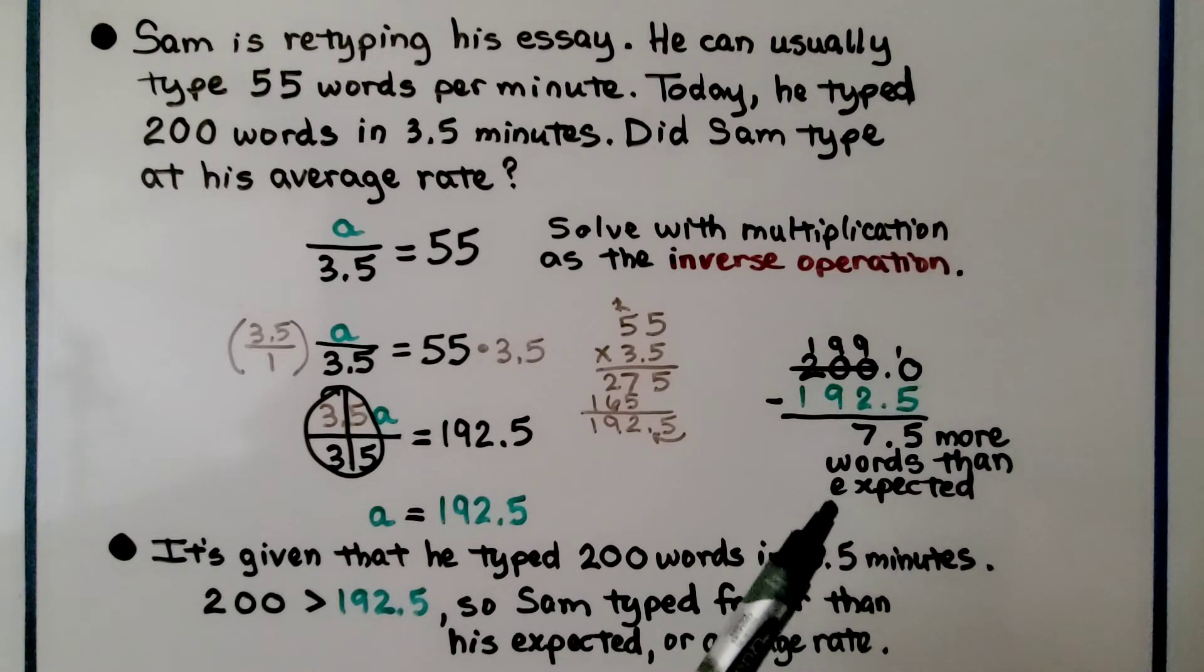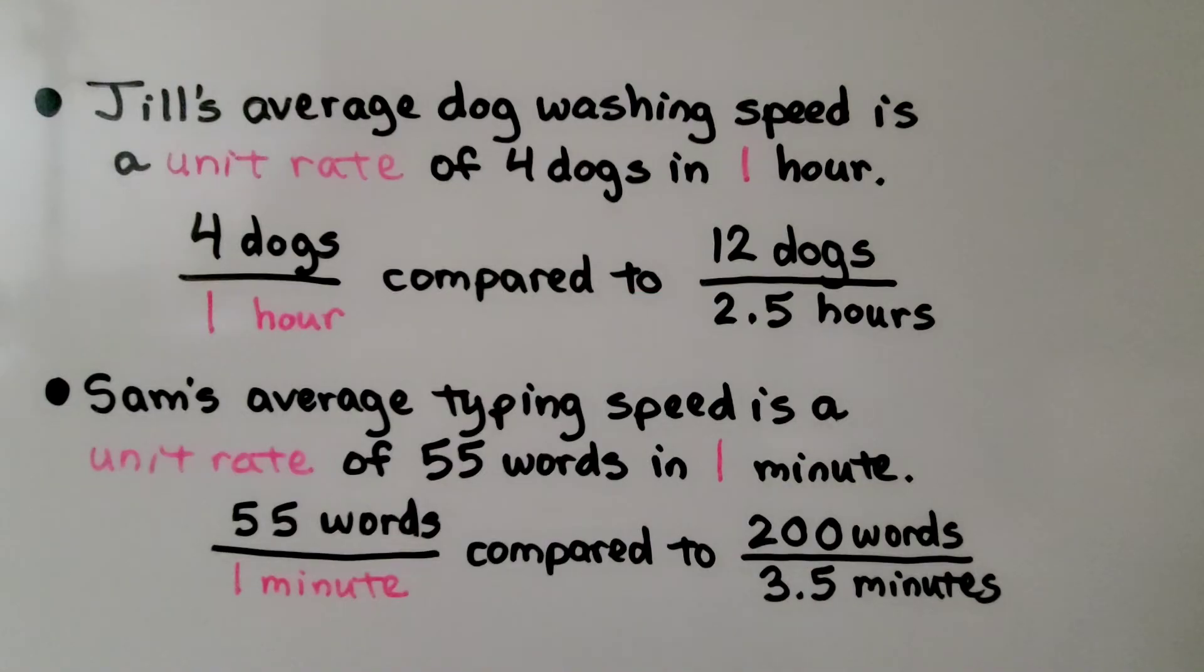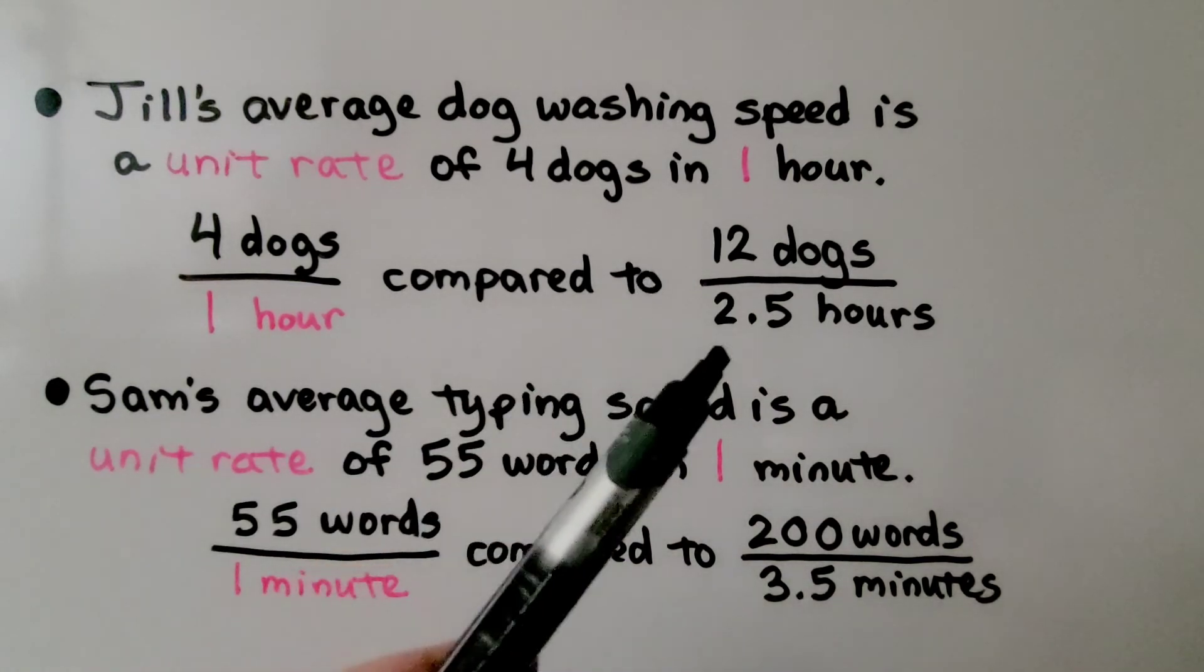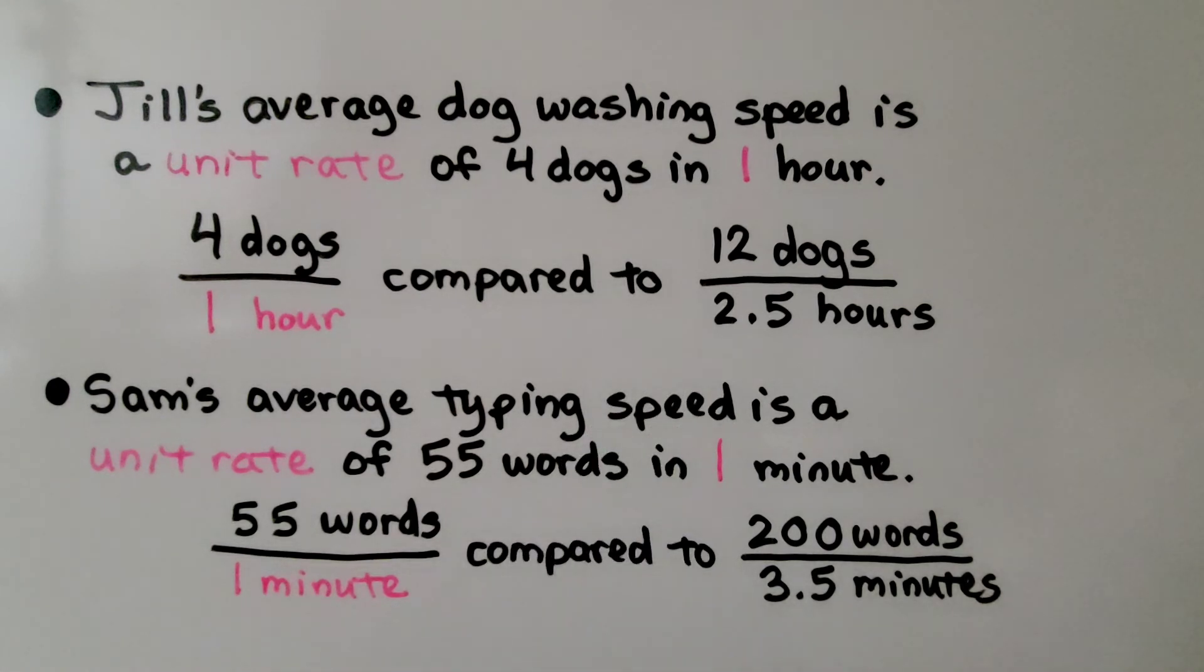Jill's average dog washing speed is a unit rate of 4 dogs in 1 hour, compared to her actual 12 dogs in 2.5 hours. Sam's average typing speed is a unit rate of 55 words in 1 minute, compared to his actual 200 words in 3.5 minutes.